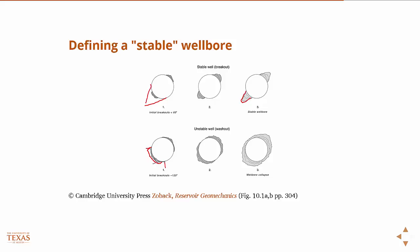By altering wellbore trajectory, we can affect the hoop stress with respect to the principal stress directions. If we drill at a slight angle, we can add stability by slightly deviating the well trajectory. Right now we're talking about vertical wells, where the only practical mechanism is mud weight. In the next class we'll talk about deviated wells.